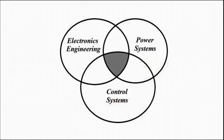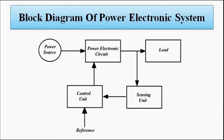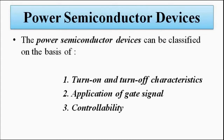Power electronics is the utilization of semiconductor devices to supply electrical power at the desired level for various applications. The electronics part handles the various semiconductor devices which form the core of the power electronic circuit. Control systems employ a closed-loop feedback system to ensure whether the power is supplied at the desired level or not. The power involvement brings power systems into play. When these three things are combined together we get the subject of power electronics, as shown in the block diagram of the power electronic system.